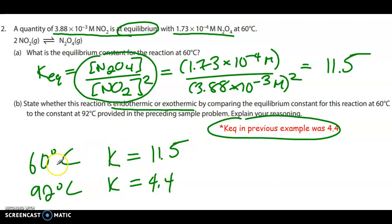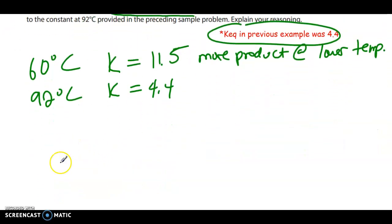If I have a larger K value at a lower temperature, that means I have more product at lower temperatures. They're asking if this is endothermic or exothermic, so you have to remember the shifting. For us, if something is endothermic, we increase the temperature and it shifts forward. By thinking about the Le Chatelier shifts that happen here, if you have a forward endothermic process, that means if you increase the energy, it would shift to the right.